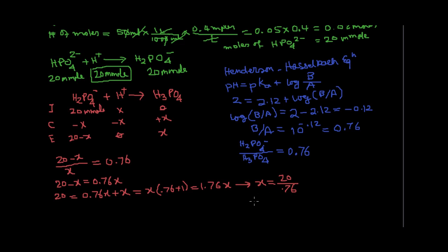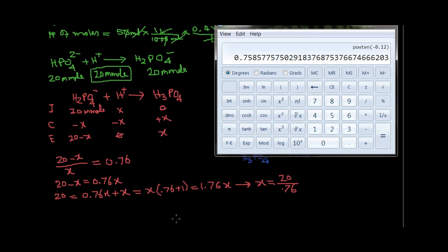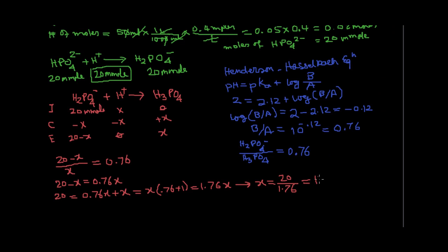How much does x become? Let's clear this. We have 20 divided by, this is 1.76, not 7.6. We have 20 divided by 1.76, and that value becomes 11.36 millimole.